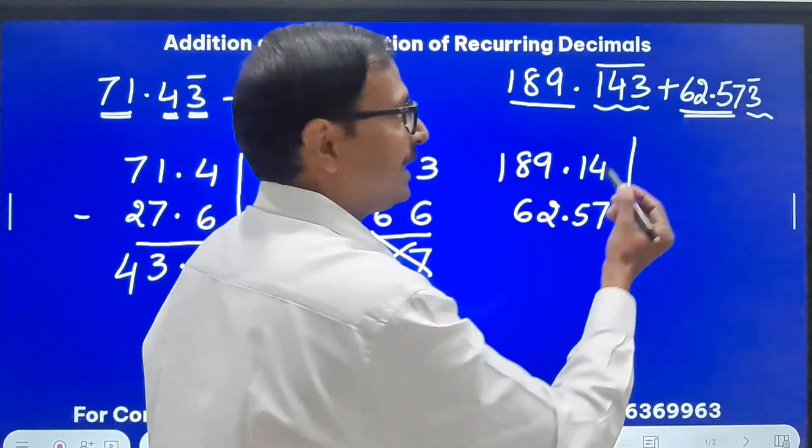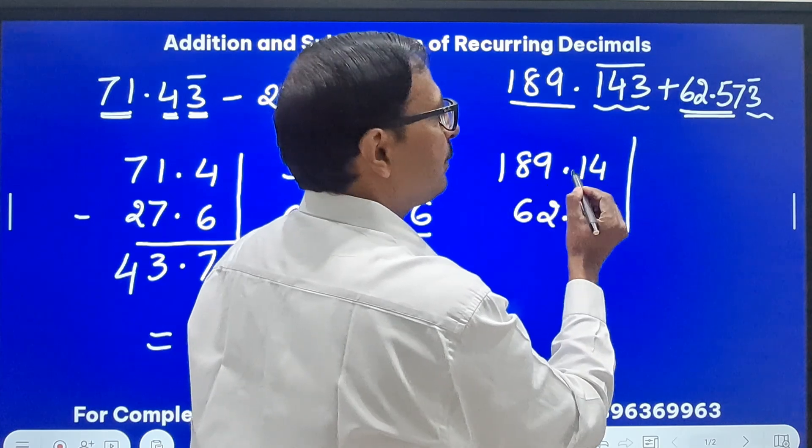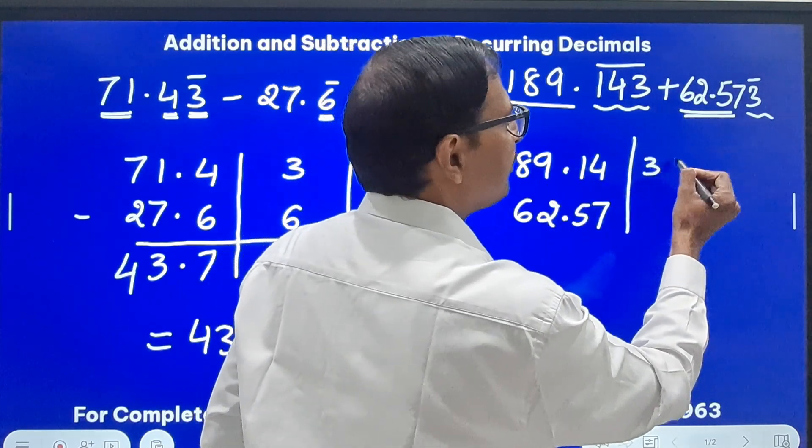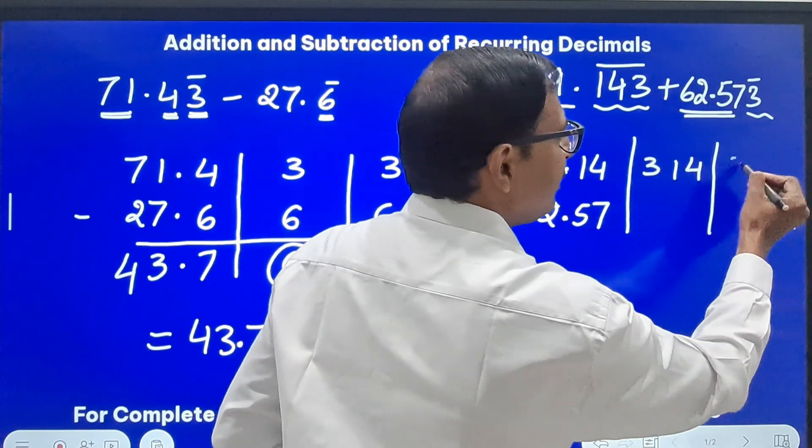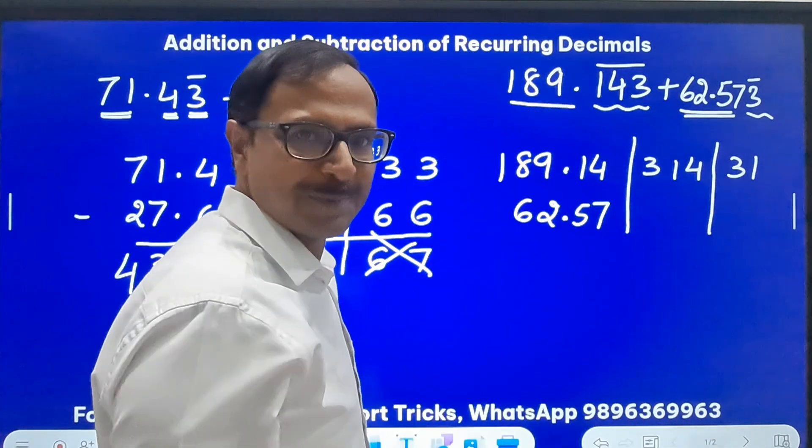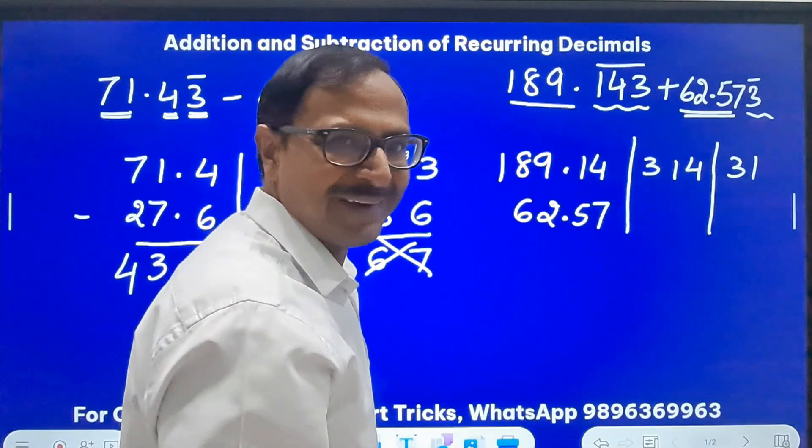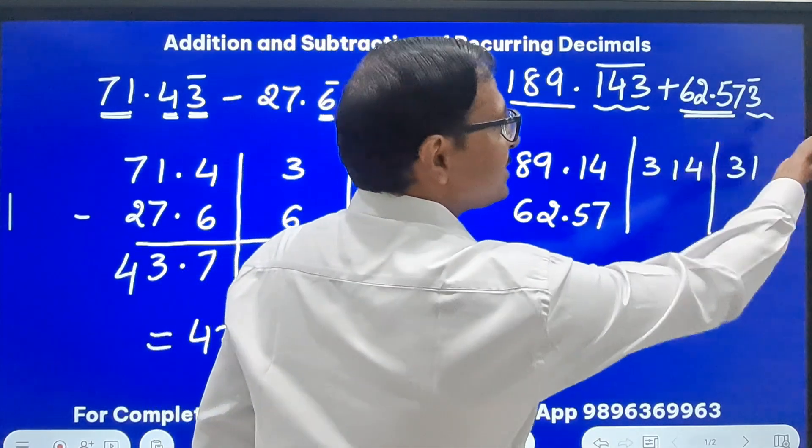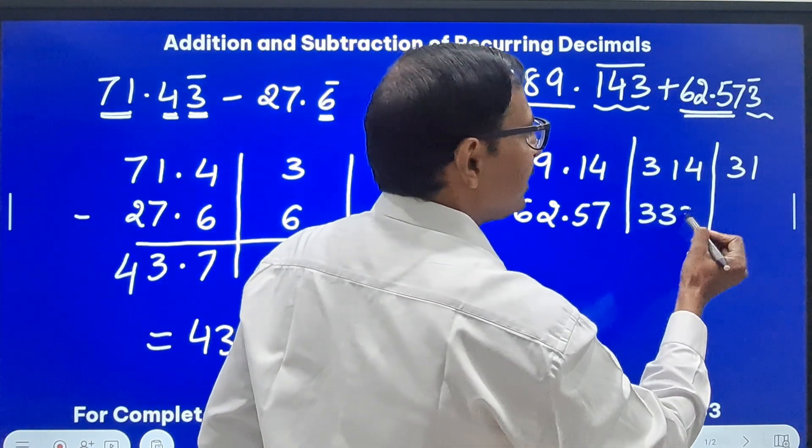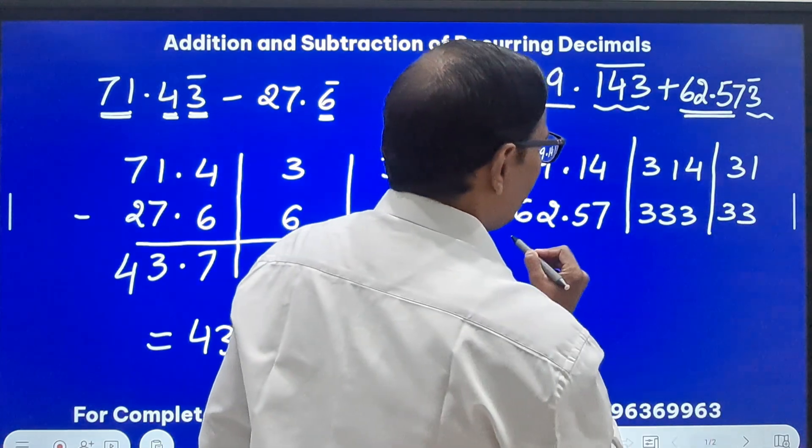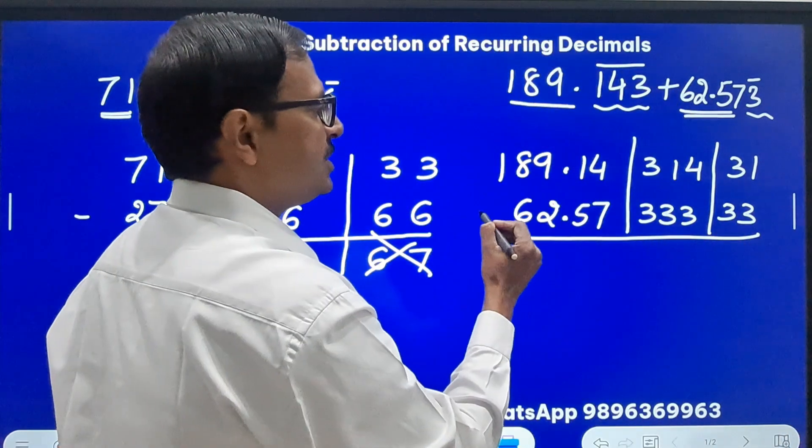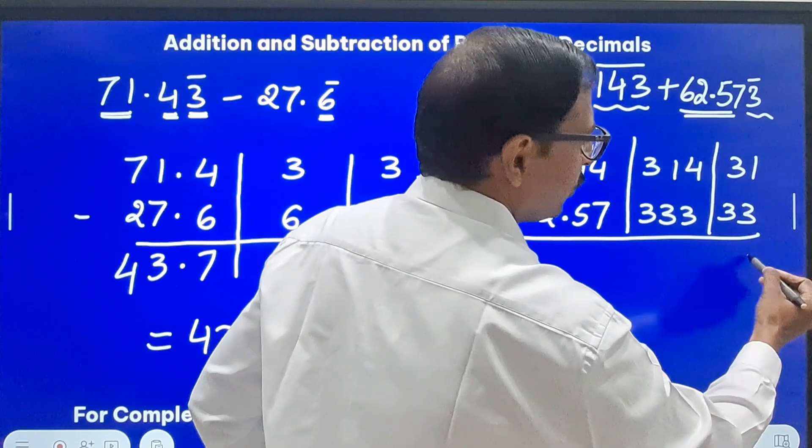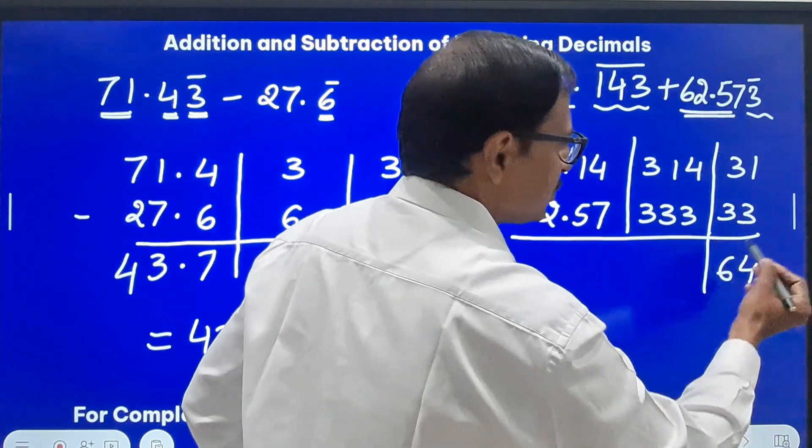Now in the middle, the LCM of three and one, the repeating number of repeating digits three and one is three, so I will take three digits. 189.143143, two digits here that is by default and three digits here. 62.57, three is repeating, so 333333. And now I have to do the addition.